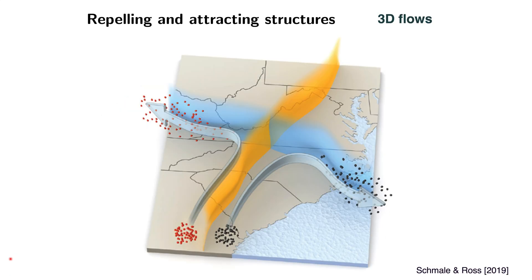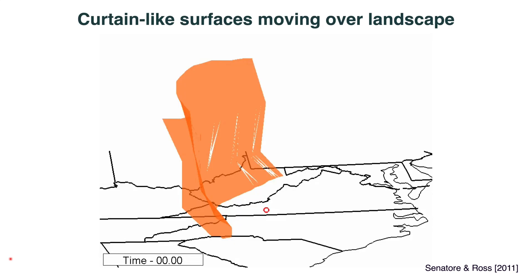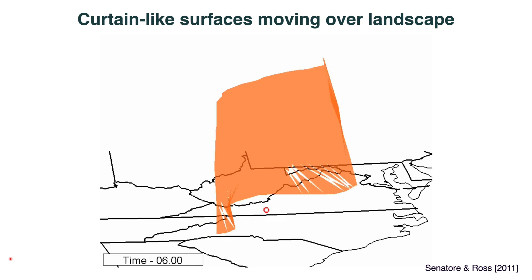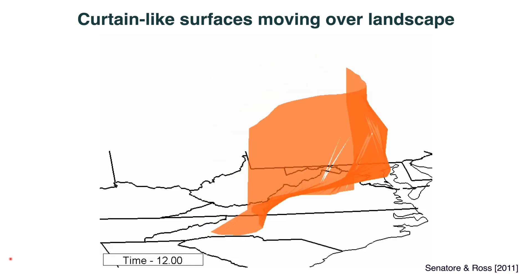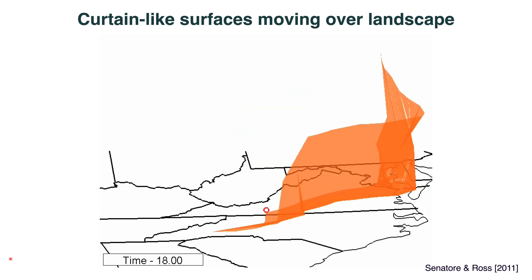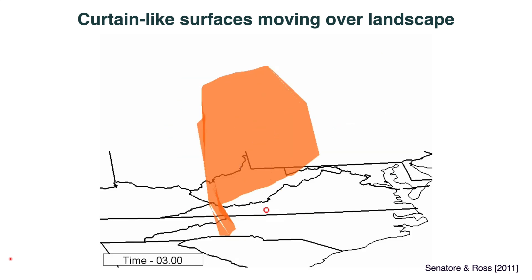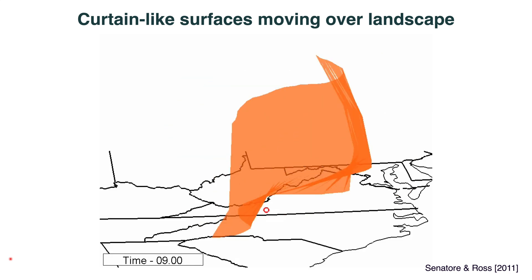These can be combined in interesting ways in realistic flows. In atmospheric flows, the red and the black particles are being separated by a repelling structure and attracted to an attracting structure. It looks like a saddle point that has been extruded in the vertical direction. It's important to keep in mind these aren't static — they're actually moving surfaces. This is showing a highly exaggerated vertical direction of a LCS passing over Virginia Tech.